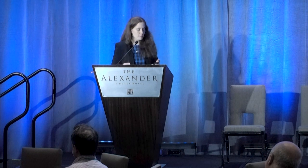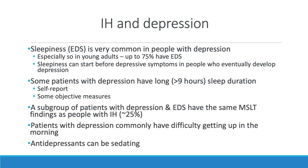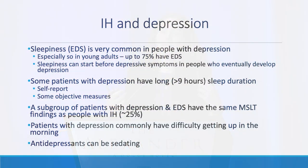Sleepiness is really common in people with depression, but it's very age-related — it's young adults with depression who tend to have sleepiness, while older adults are more likely to have insomnia. IH also starts around that same time. Some people who eventually develop clear depression will develop sleepiness as their very first symptom. There are newer data suggesting that people who are depressed and sleepy actually do sleep significantly more. The MSLT — the daytime nap test used to diagnose IH — is abnormal in about a quarter of people who have depression and sleepiness.